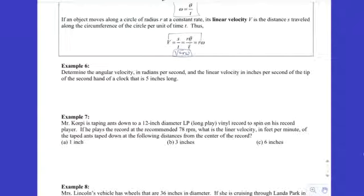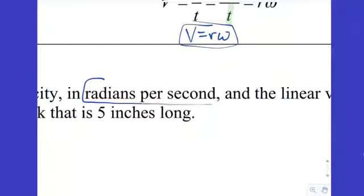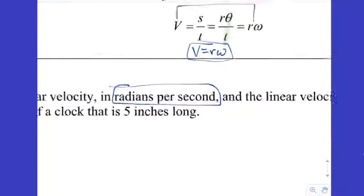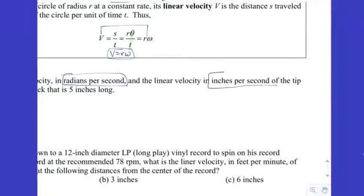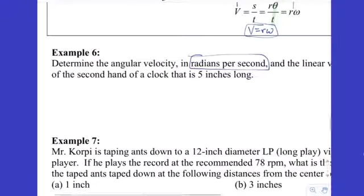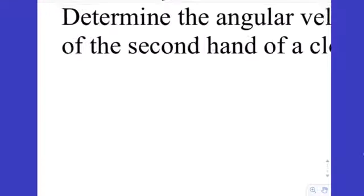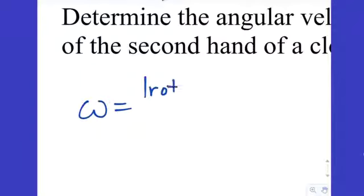Example 6 asks us to determine the angular velocity in radians per second and the linear velocity in inches per second of the tip of a second hand on a clock that is five inches long. We start with some common knowledge: the second hand makes one full rotation every 60 seconds — or one minute — so we want to express that in radians per second.